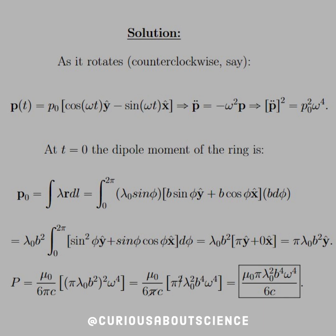Once we divide out that square and square every term, a factor of π cancels, and we are left with μ₀π λ₀² b⁴ ω⁴/(6c). Not too bad.